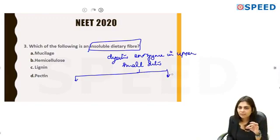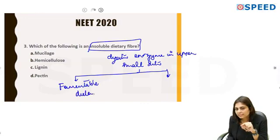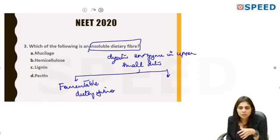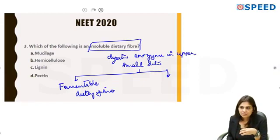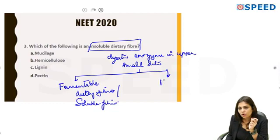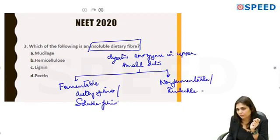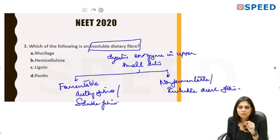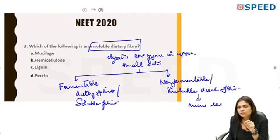If a dietary fiber can be acted upon by colonic microorganisms, it is called a fermentable dietary fiber. These fibers get broken down to polar substances like carbon dioxide, attracting water and becoming soluble — so they are called soluble fibers. Dietary fibers that cannot be acted upon by even colonic microorganisms are called non-fermentable, or insoluble dietary fibers. Though insoluble, they stimulate mucus release in the large intestine, aiding GI motility and relieving constipation.